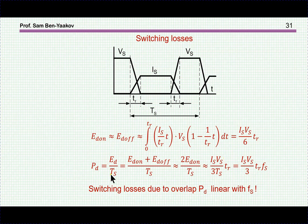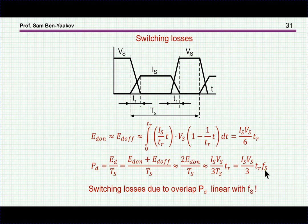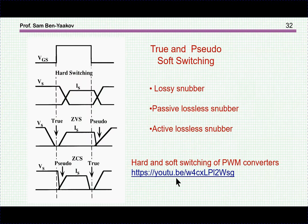To get the power, you divide by the period or multiply by the frequency — which is the same thing. The amount of energy lost is a function of the maximum current, the maximum voltage, and the transition time, multiplied by frequency. So switching loss is linear with frequency: the higher the frequency, the higher the switching losses due to these transitions.